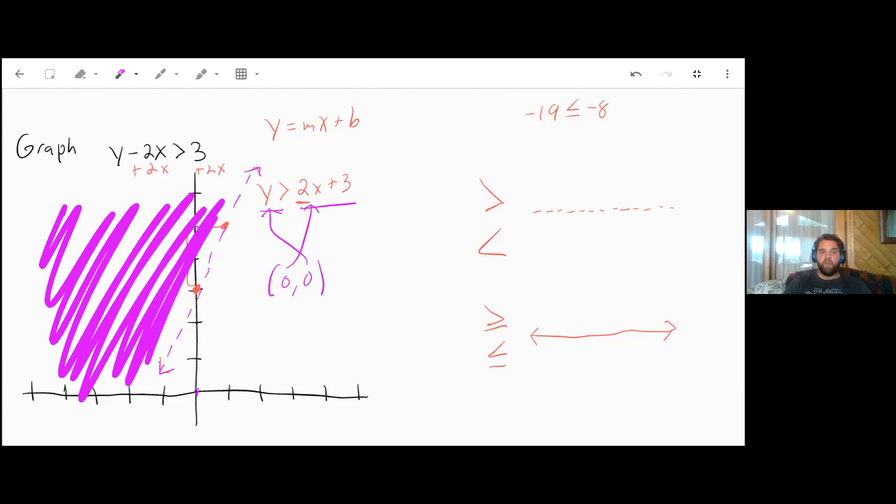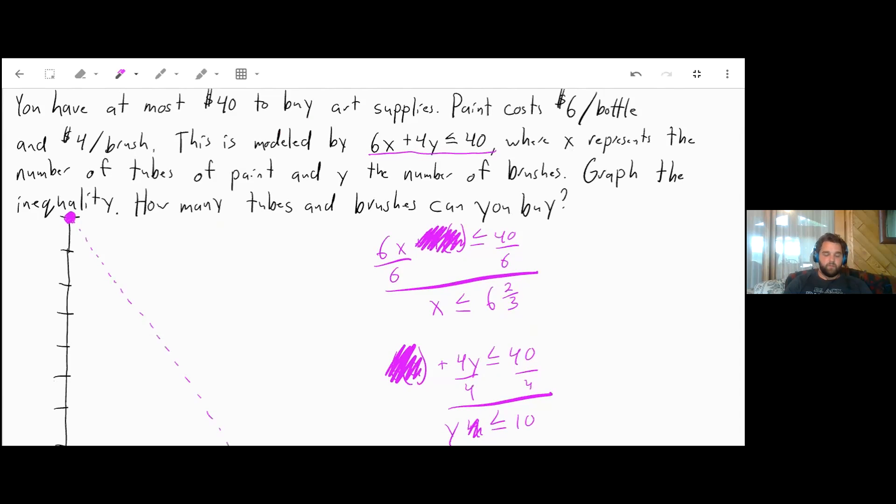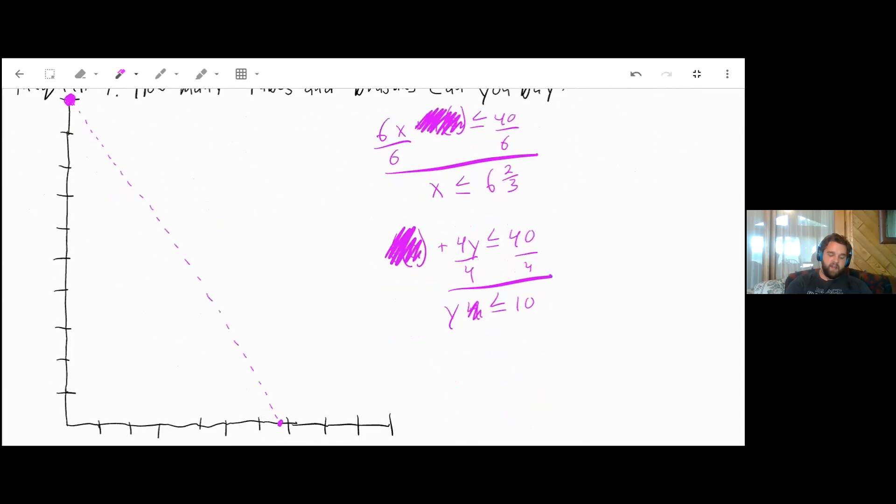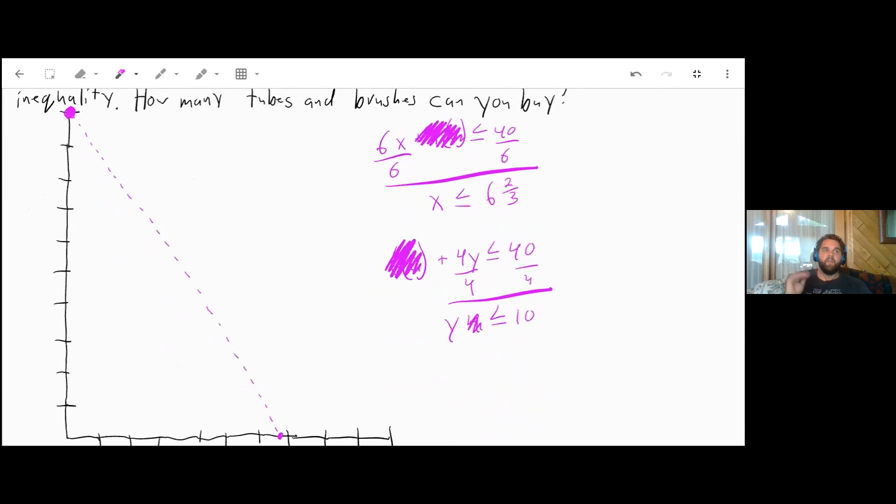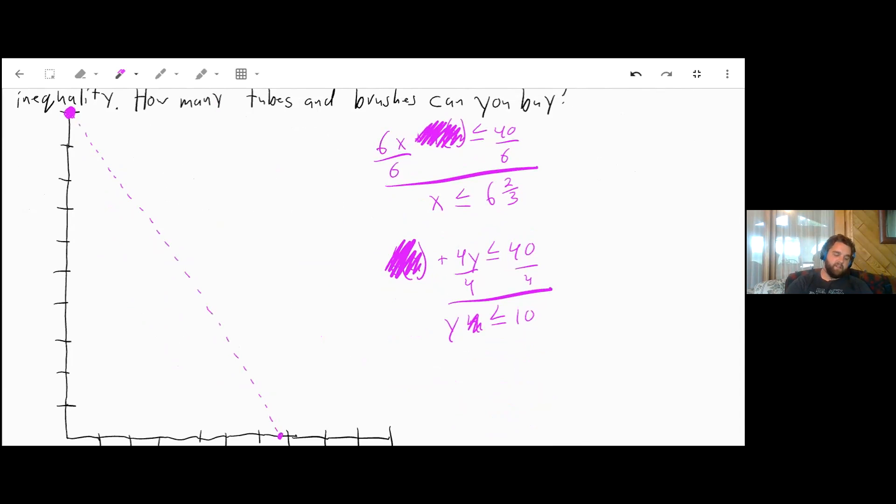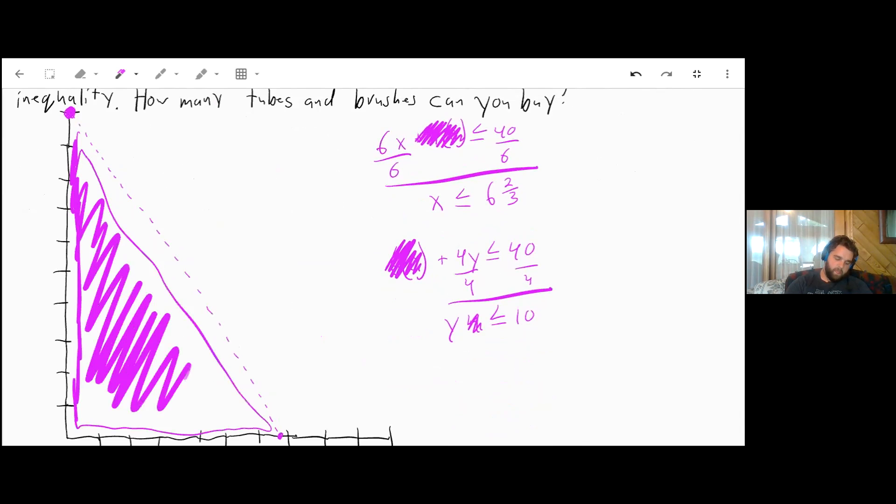Let's do that on our final problem. If this line represents the $40 mark, and that's the most money we can spend, we can't spend more than 40, which would be this whole side out here. That would not be good. But we could spend less than 40. So our final answer is this dashed line, and then this whole area inside our dashed line.